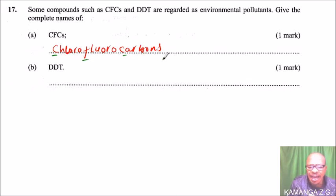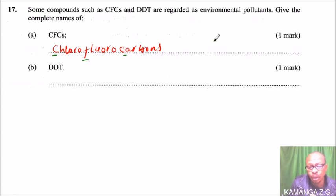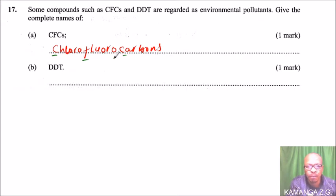What are chlorofluorocarbons? These are non-toxic, non-flammable chemicals containing atoms of carbon, atoms of chlorine, and atoms of fluorine.